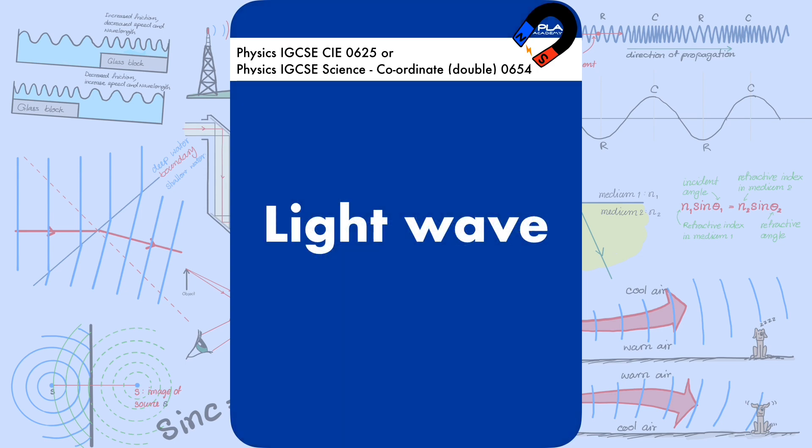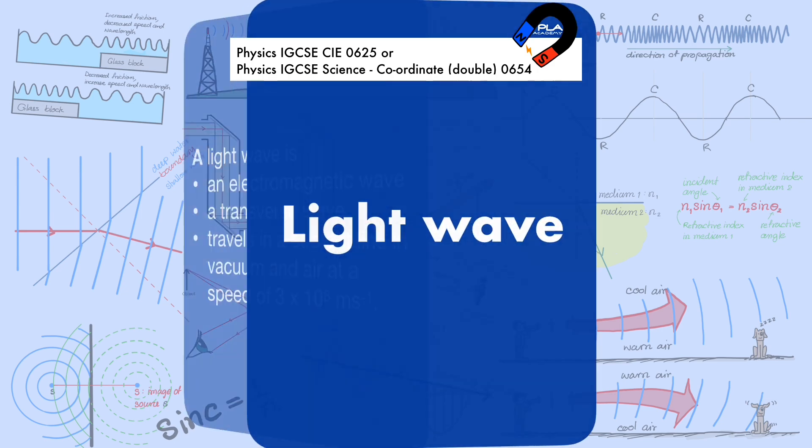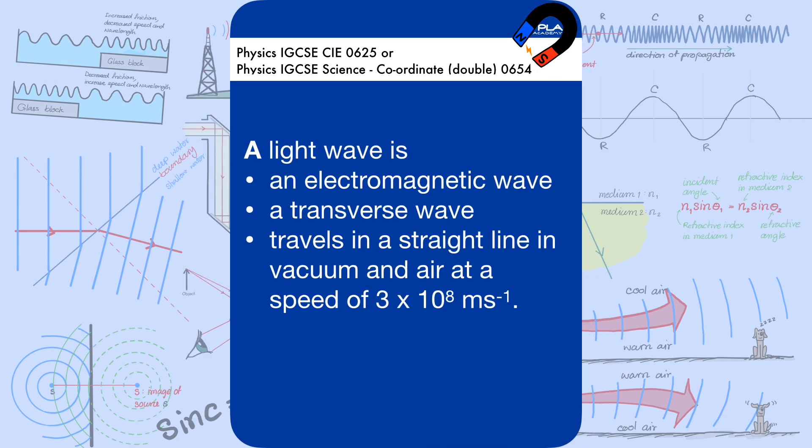A light wave is an electromagnetic wave that is a transverse wave and travels in a straight line in vacuum and air at a speed of 3 × 10⁸ meters per second.